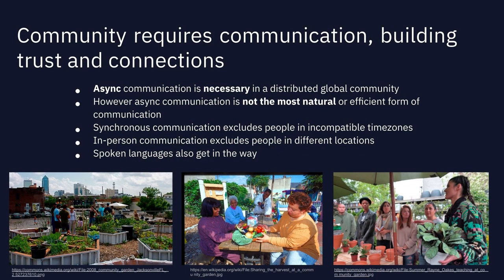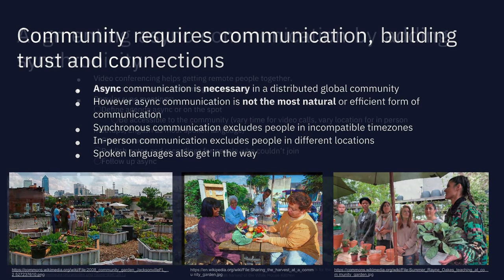Community requires communication, building trust and connection. We are not just machines that exchange information — you don't just agree on what we're going to do by making an argument on a mailing list and expecting everyone to obviously agree. Async communication is necessary because this is a global distributed community, so it must be the primary mode. However, it's not the most natural way for human beings to communicate — you don't get the tone, you don't know the facial expression of the person writing the email. And synchronous communication excludes people in incompatible time zones, while in-person excludes people in different locations. How do we make a good trade-off?